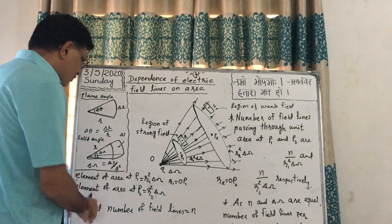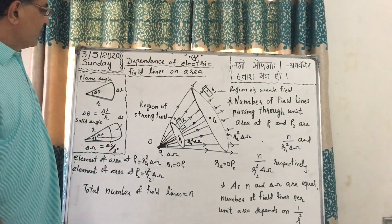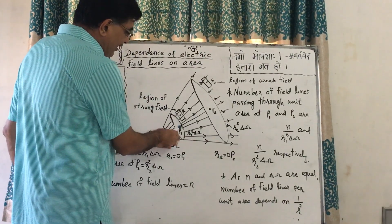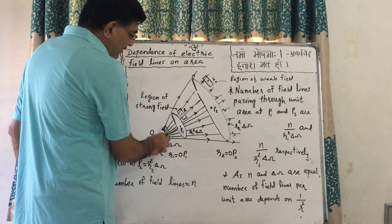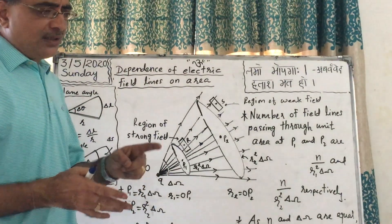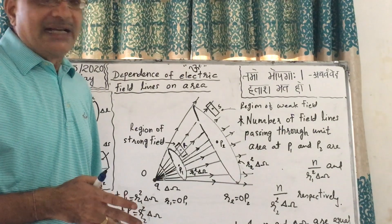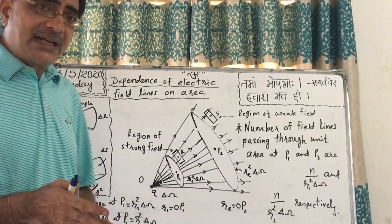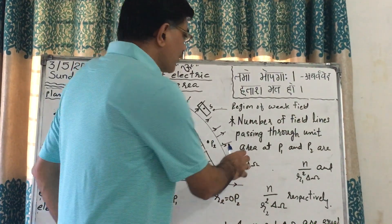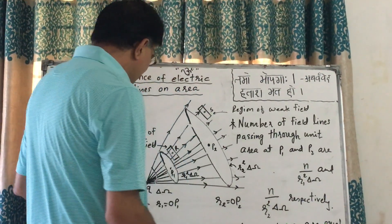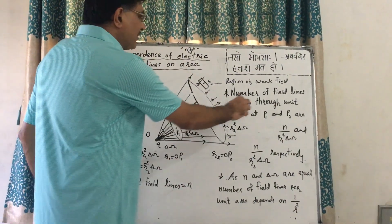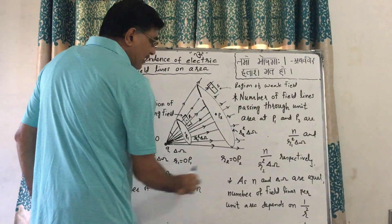The total number of field lines is N. The number of field lines passing through element of area at P1 and P2 are the same, and the solid angle subtended is also the same for both. To find lines passing through unit area, we divide by area. At point P1, lines per unit area equals N divided by R1² delta omega. At point P2, it equals N divided by R2² delta omega.